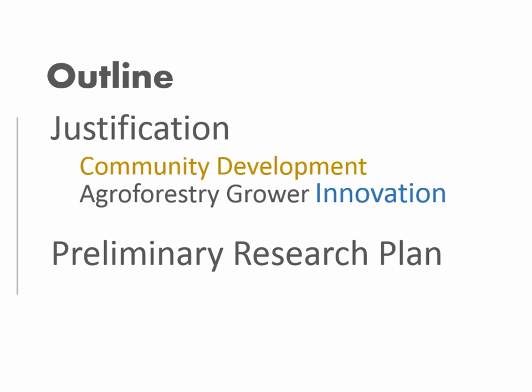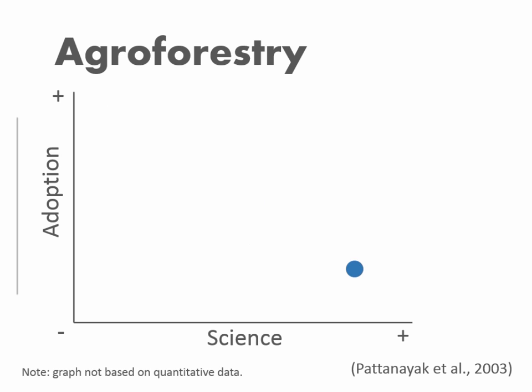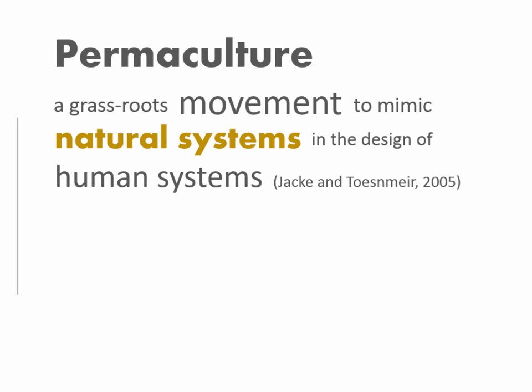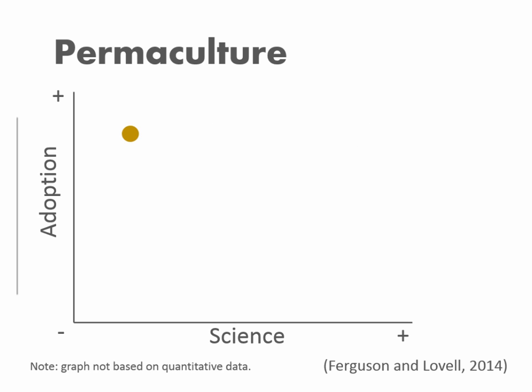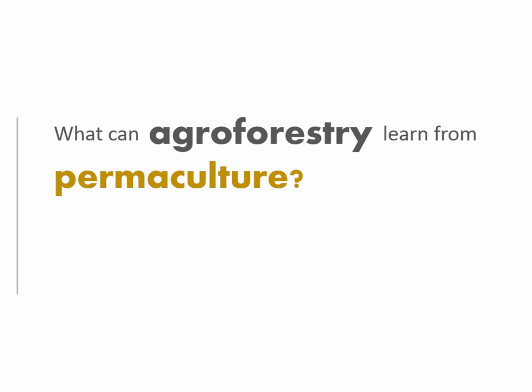Agroforestry has a very strong scientific backing, yet we still see relatively low adoption. When we look at permaculture — a grassroots movement to mimic natural systems in the design of human systems — the relationship is kind of inverse: permaculture lacks a scientific basis but has a considerable amount of adoption. That leads to the question: what can agroforestry learn from permaculture?